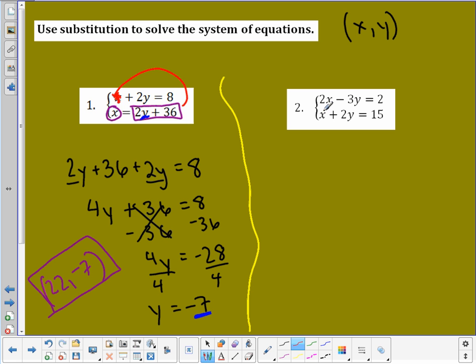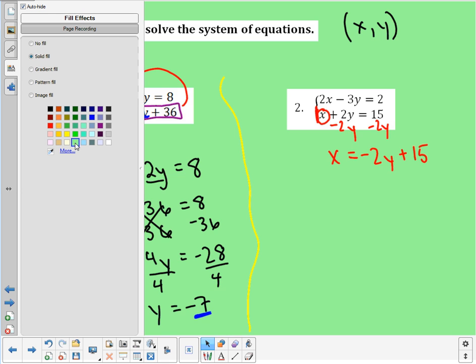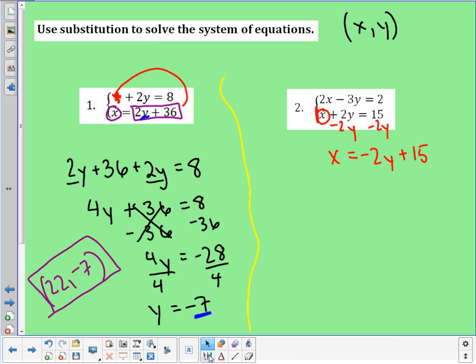That's what I'm going to do first. Since I see that this x has a coefficient of 1 on the bottom, I'm going to solve this bottom equation for x. So, I'm going to move the 2y over to the other side. Which leaves me with x = -2y + 15. Sorry, that red's kind of hard to see on the green. I'll go ahead and make that a little easier maybe. There we go. It's a little better.